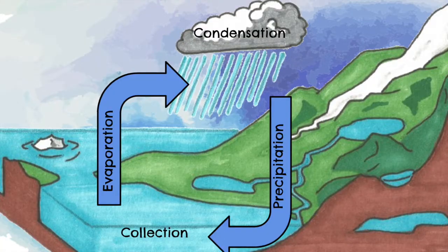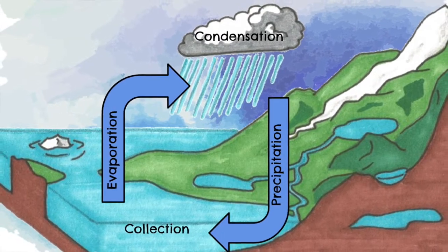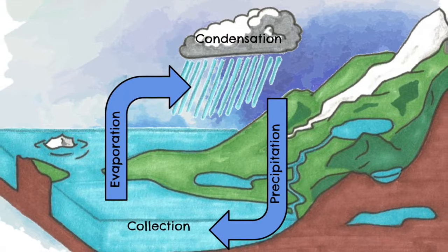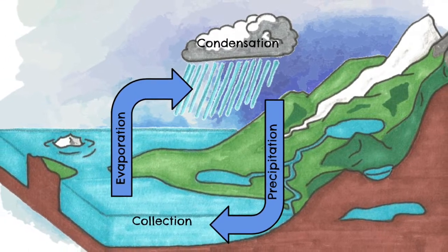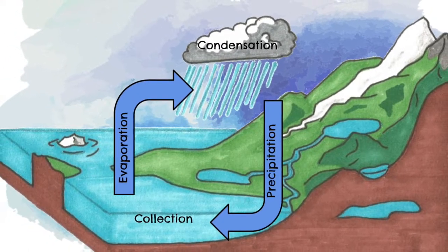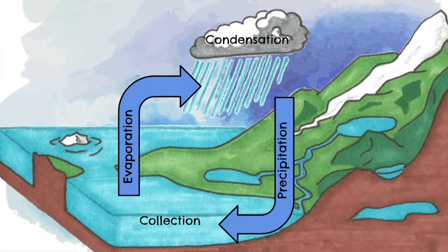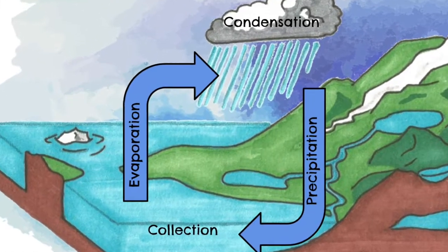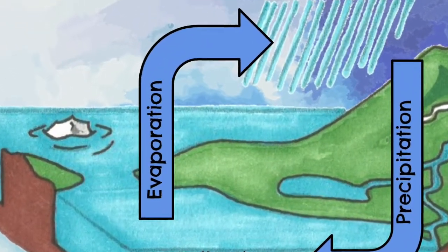Earth does not create new water. It recycles the same old water over and over again in a process called the water cycle. The water cycle has four stages. The first one is called evaporation.